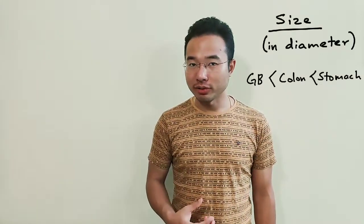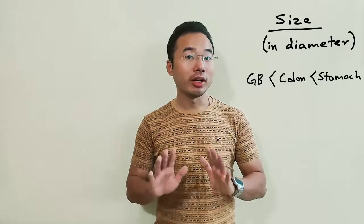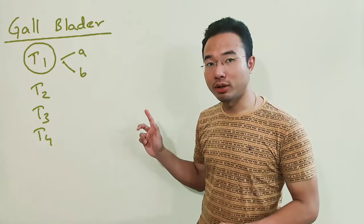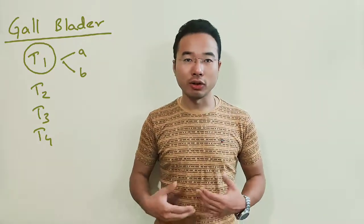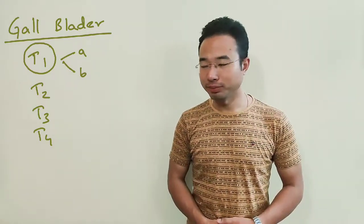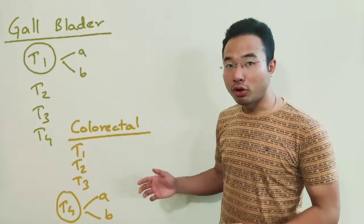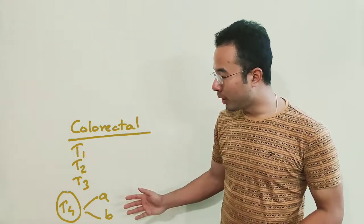Among these three organs, which one is the smallest? The gallbladder is the smallest, so it gets the subdivision in the smallest number — T1. The gallbladder has T1a and T1b. Next in size is the colon, which gets the subdivision in the bigger number — T4a and T4b.